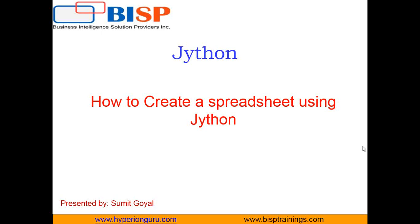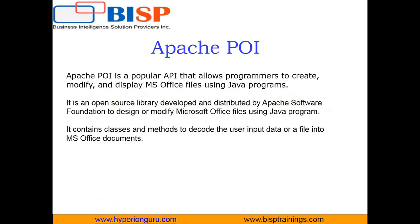For exporting data in an Excel file using Jython, one open source library is required — and that is called Apache POI. First let's understand what Apache POI is, and then we'll see how to create a spreadsheet using it. Apache POI is a popular API that allows programmers to create, modify, or display MS Office files. We can use Apache POI to create Excel sheets, Word documents, or other Office files using Java code.